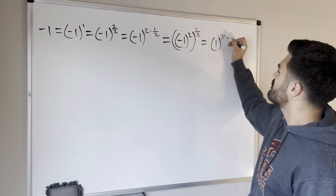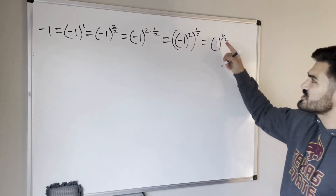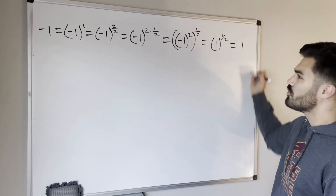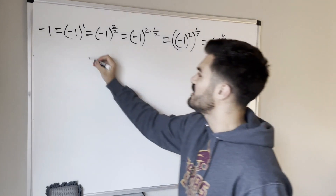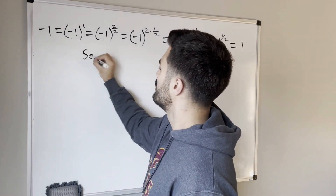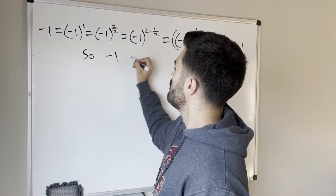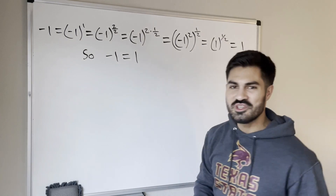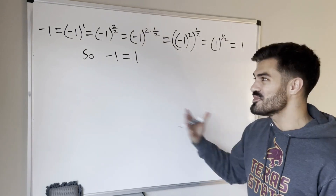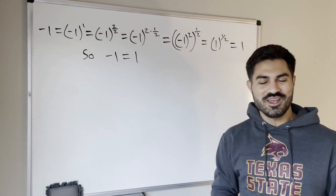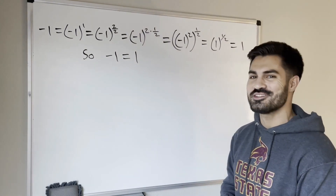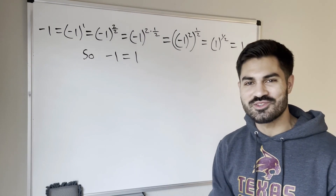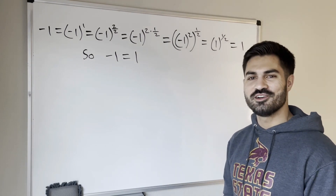That one half is the same thing as the square root, and the square root of 1 is 1. So what we get is negative 1 equals 1. See if you can point out the mistake and explain it in the comments below. Until next time, keep flexing those brain muscles — I'll see y'all later.